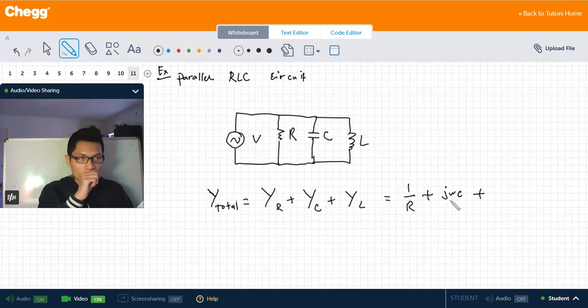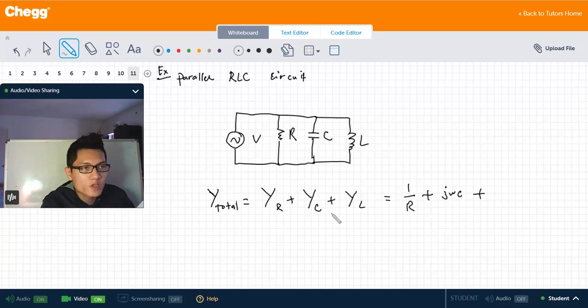And also the admittance of L is 1 over jωL.